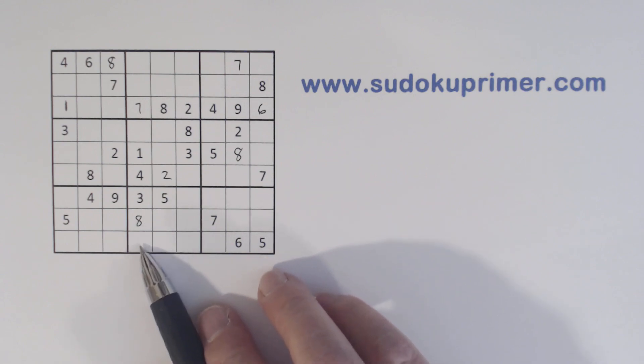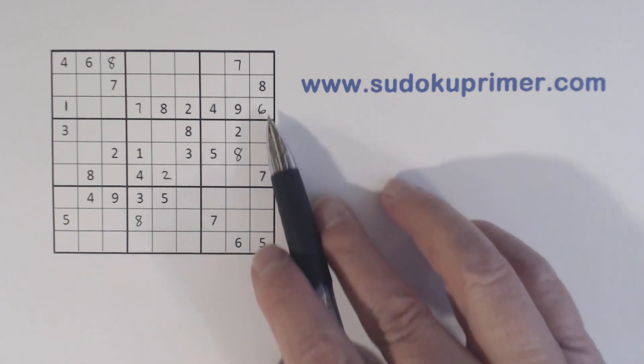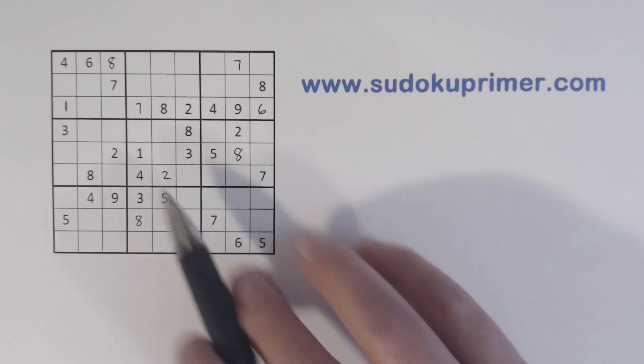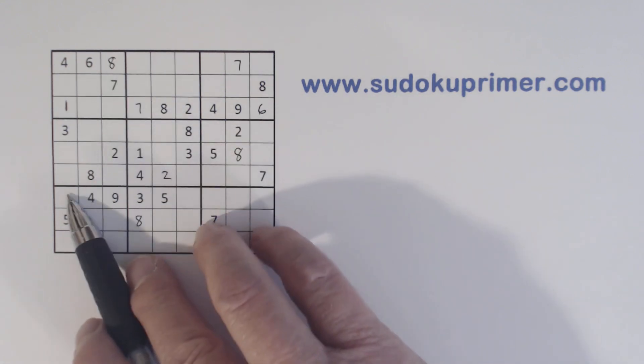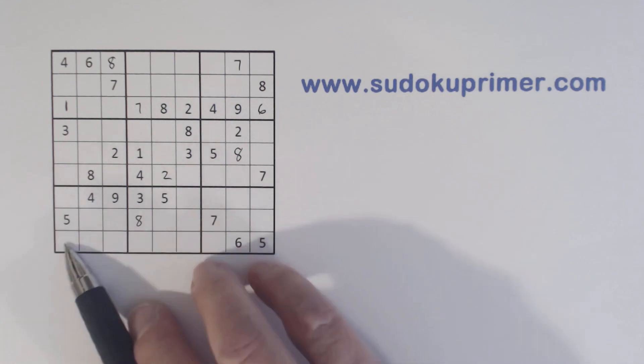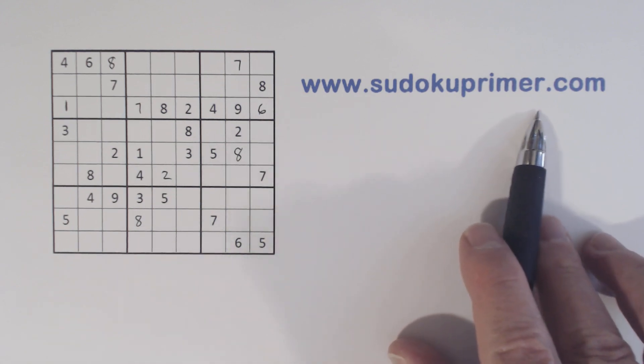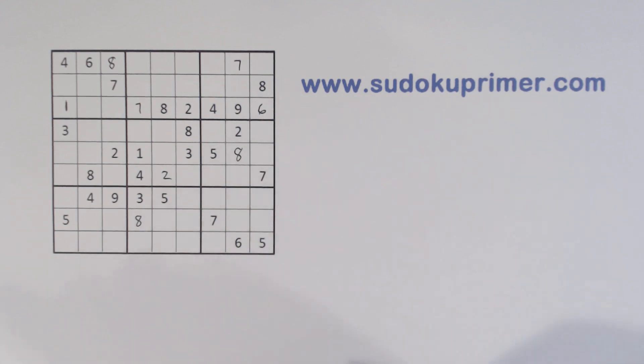You may wonder why this couldn't be an eight. Well we've got an eight and eight here, so one of these is an eight. We've got an eight and an eight here, so one of these is an eight. Using double row elimination, we know that this can't be an eight, and if you're not familiar with that concept of double row or double column elimination, go to SudokuPrimer.com and in the techniques section you'll find a write-up about those.